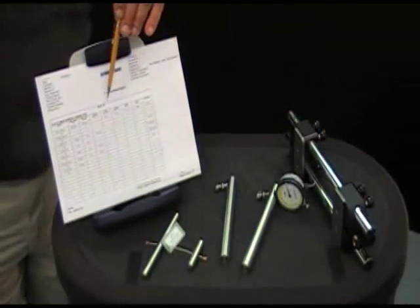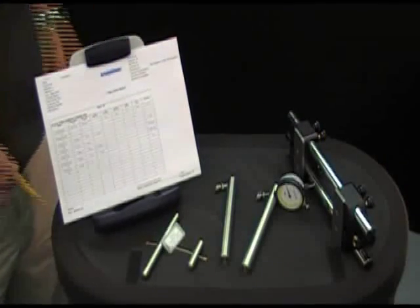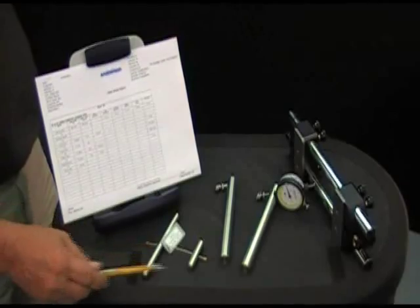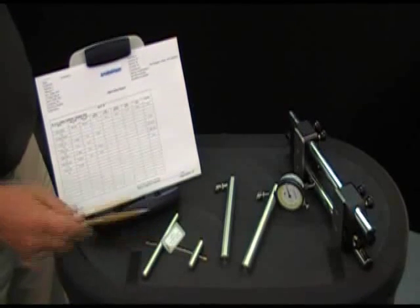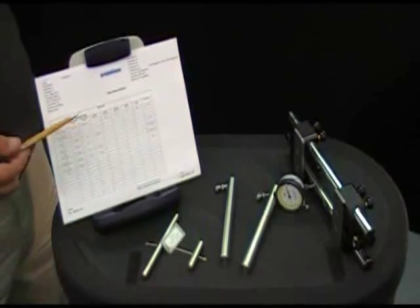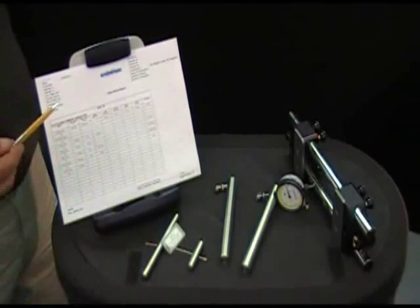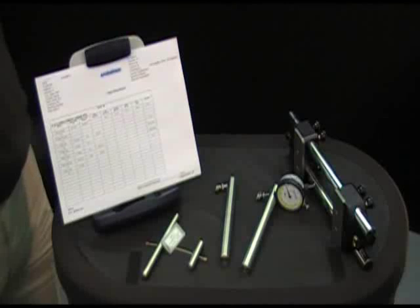Over in the rod setting standard, it shows us the proper A dimension and B dimension setup for the gauge. This is very critical that we have this so that we can document the serial numbers of our standards and our gauges to show traceability of our calibration.